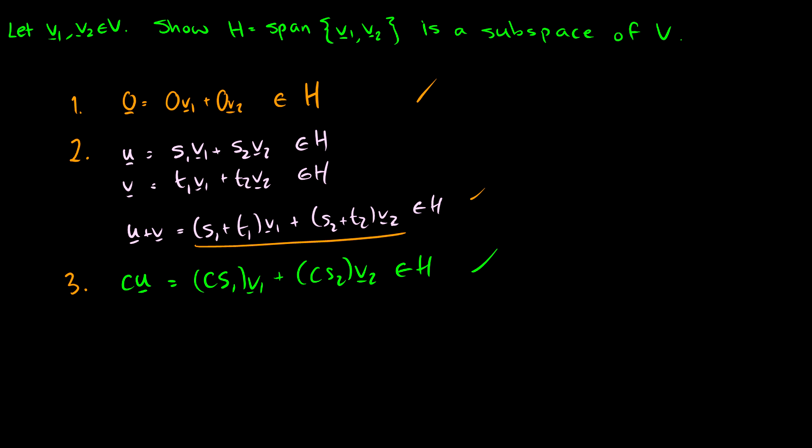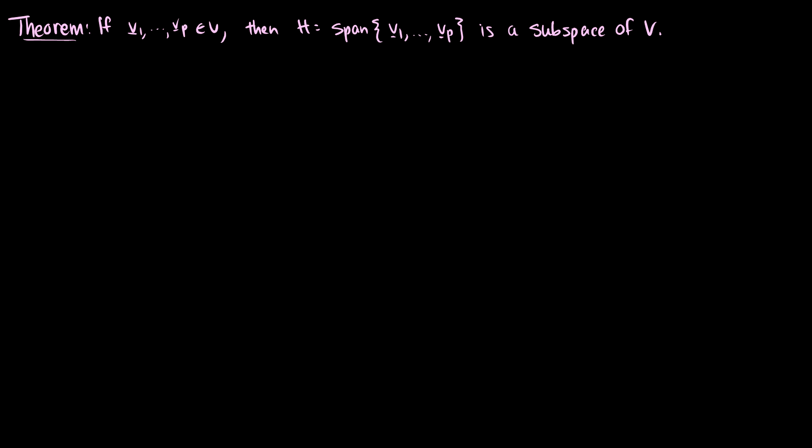If we take the span of V1 through V2 for some vector space, it's going to be a subspace. We can generalize this further: if we have vectors V1 through Vp in our vector space, then the span of V1 through Vp is going to be a subspace of V.